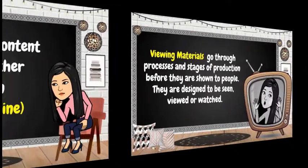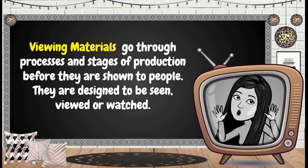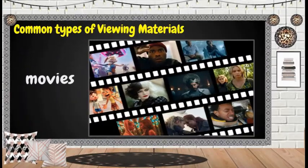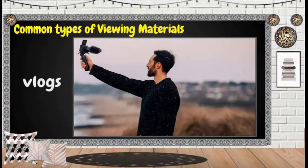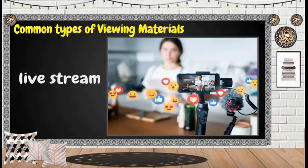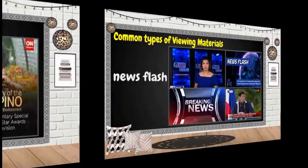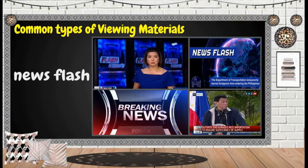What are viewing materials? Viewing materials are visual in nature. These materials go through processes and stages of production before they are shown to people. They are designed to be seen, viewed, or watched. Common types of viewing materials are videos, movies, vlogs, livestream, documentaries, newsflash, and infomercials.